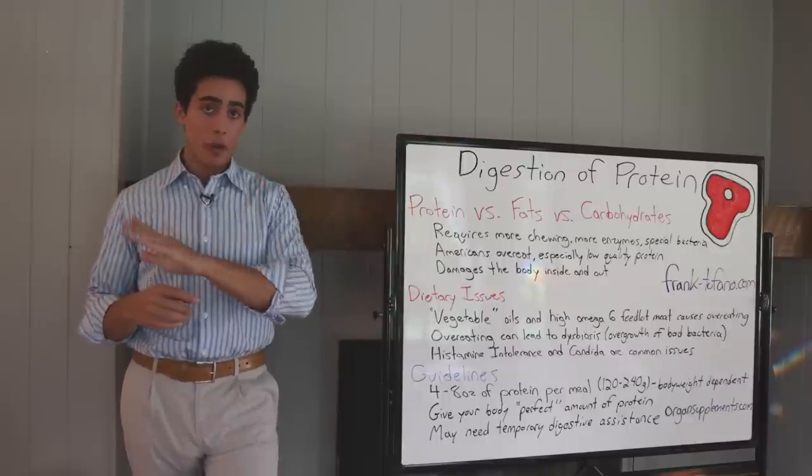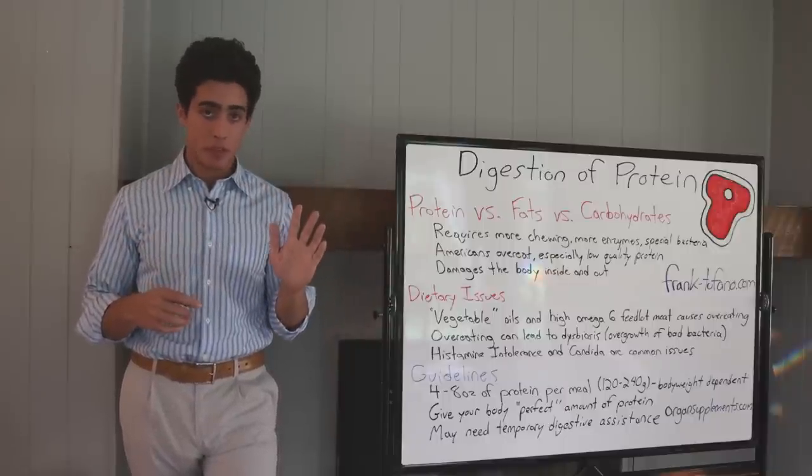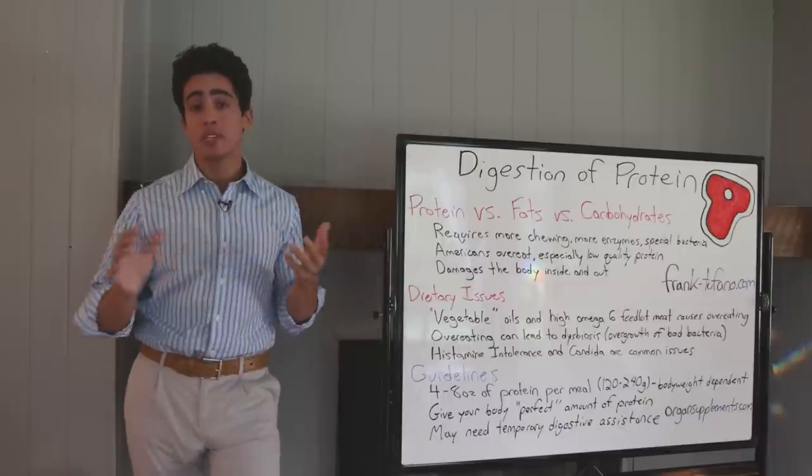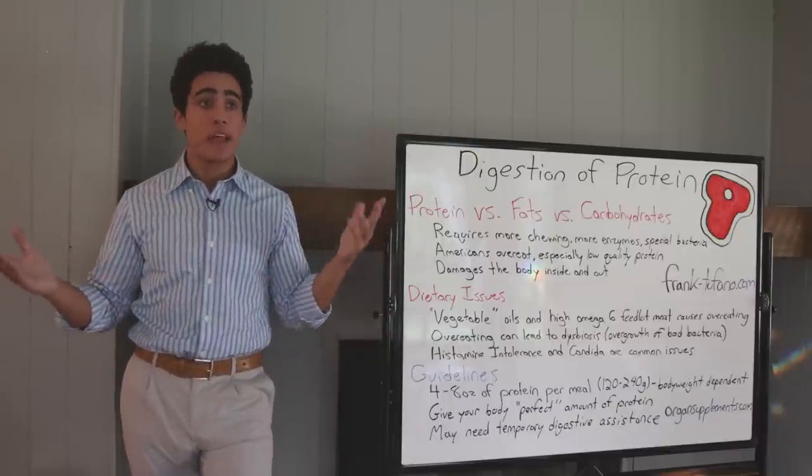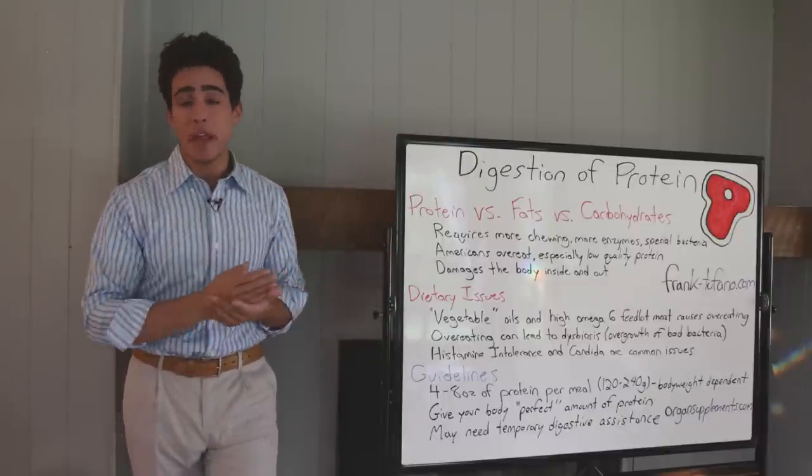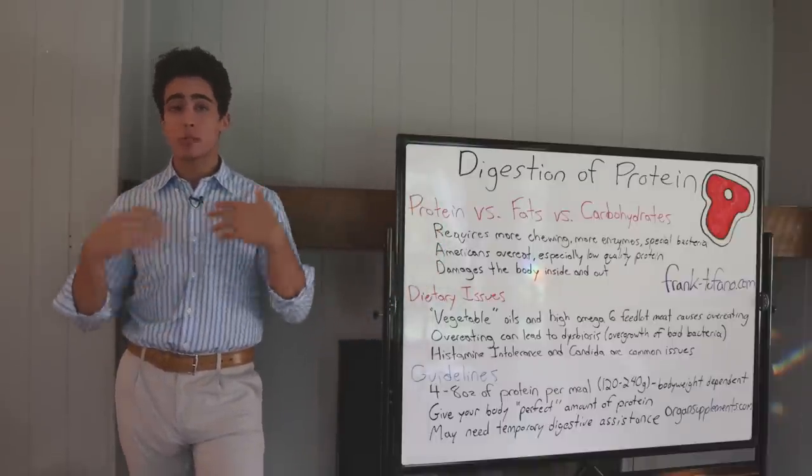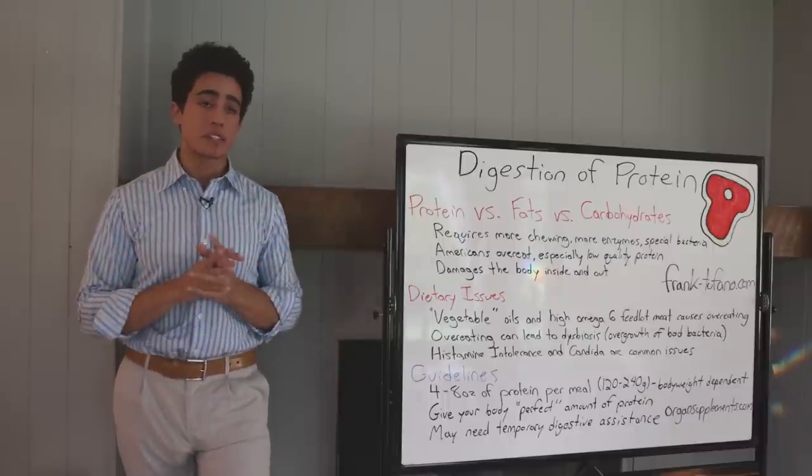What's interesting is out of the six enzymes in my custom macronutrient blend, four of them are for protein. Protein takes over four enzymes to digest, whereas carbs and fats, it's really minimal. In many cases, the bacteria in your stomach will just digest the carbohydrates for you, and the fats can almost be absorbed directly into the small intestine.